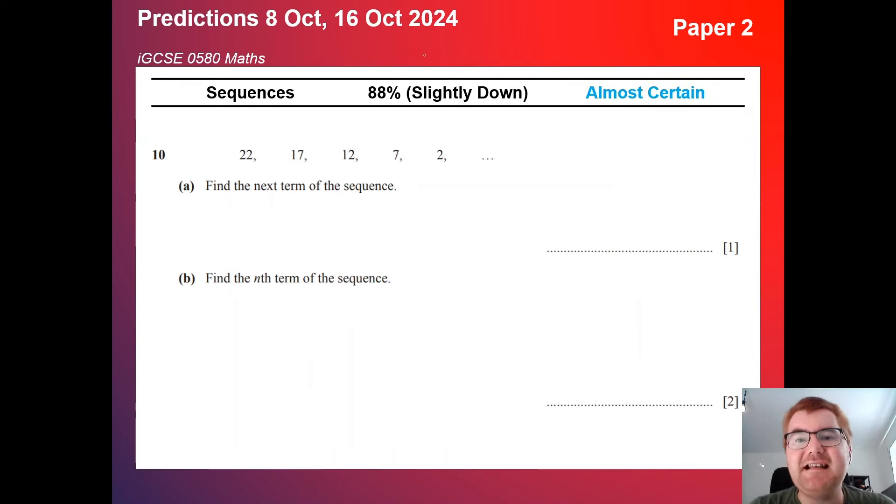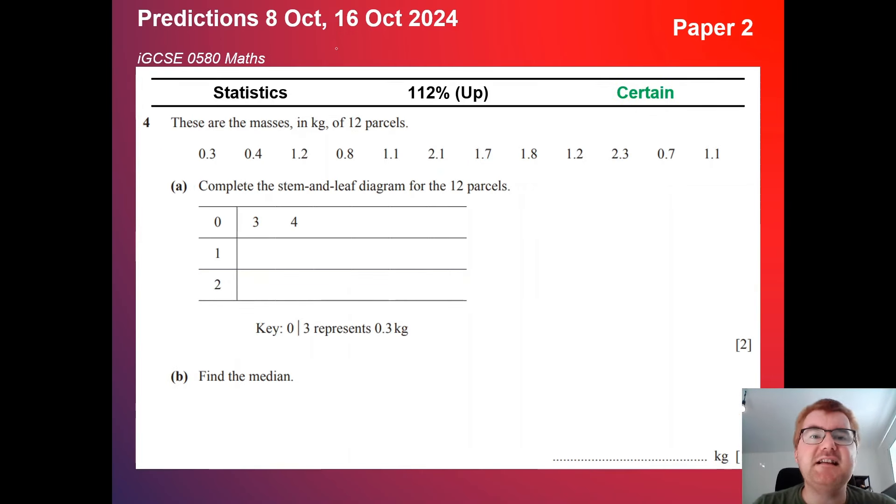On to sequences, slightly down here at 88%, so it's now in the almost certain category. This is a very typical question. Work out the next term, usually a one mark question. And then finding out the nth term of sequence. Usually this will either be a linear sequence of some kind or, like in the example here, a quadratic. They often like putting quadratic sequences in too. It will be a few extra marks as well. Almost certain, but I'd still highly recommend you revise this topic.